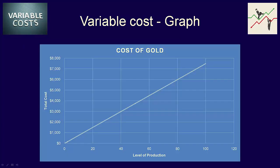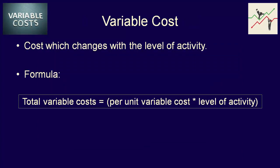You've likely already seen a variable cost graph — it's one where the straight line is increasing as the level of activity increases. From this graph, we also know that the formula to calculate total variable costs is: total variable cost equals variable cost per unit multiplied by the level of activity.